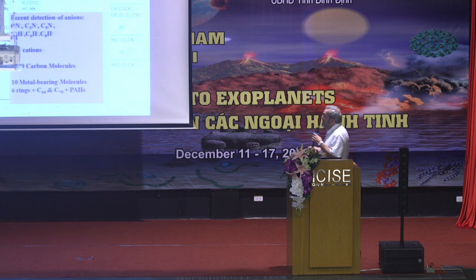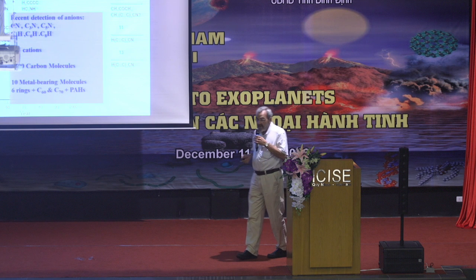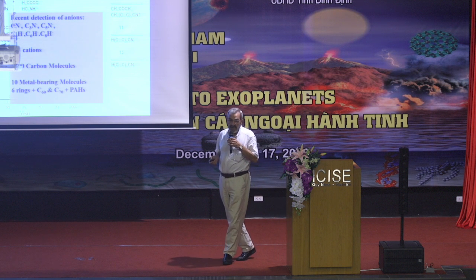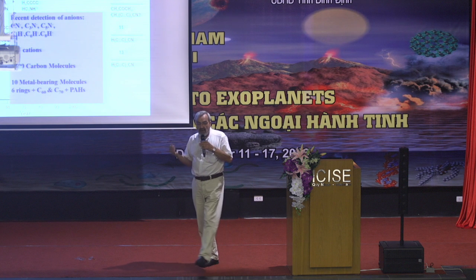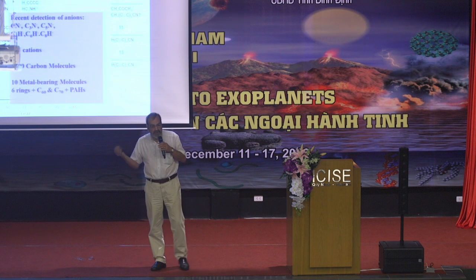This is the list of molecules detected in space — something like 200 species. Most of them are diatomics, but we also have molecules with 12 atoms, like benzene, ethyl methyl ether, and some others. We have a few cations — around 11 molecules are positively ionized — and also anions. All the chemistry in our clouds is based on reactions between ions and neutrals.